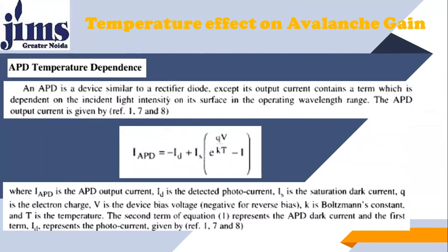Now, come to avalanche photodiode temperature dependence. An APD is a device similar to a rectifier diode, except its output current contains a term which is dependent on the incident light intensity on its surface in the operating wavelength range. The APD output current depends upon temperature as well. In the equation, IAPD is the APD output current, ID is the detected photocurrent, IS is the saturation dark current, Q is the electronic charge, V is the device bias voltage, K is Boltzmann's constant, and T is the temperature.